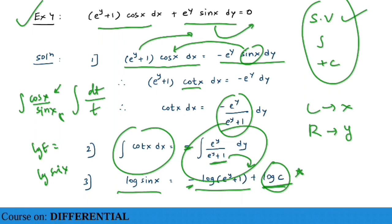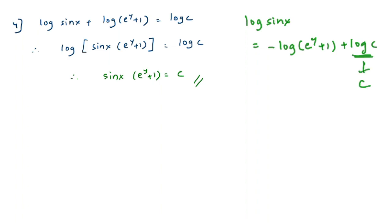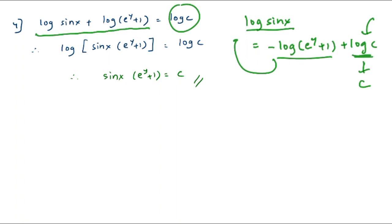Why did we take log c instead of just c? Because every term in the equation is a log term, so the constant should also be expressed as log c to give a standard solution. Rearranging: log sin x + log(e^y + 1) = log c. Using the property log a + log b = log(ab), we get sin x · (e^y + 1) = c, which is the standard solution.